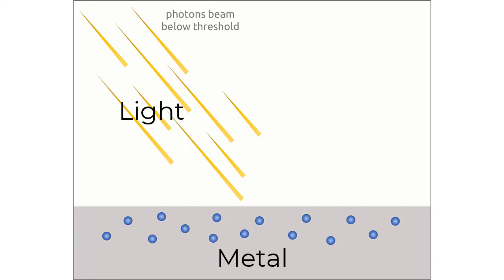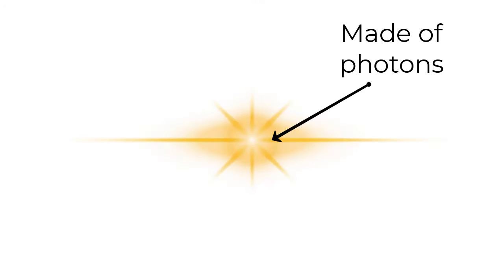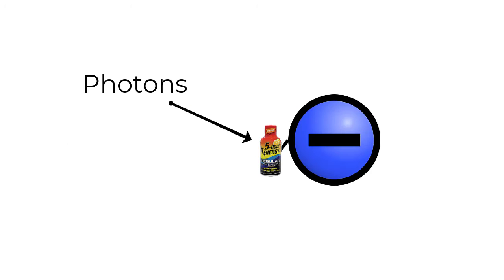But what is the photoelectric effect? Here is a simplified version. The photoelectric effect is what takes place when light hits a metal and gives the metal's electrons energy. Light is made up of photons, which are like energy drinks for electrons. But each electron can only gain energy from one photon.